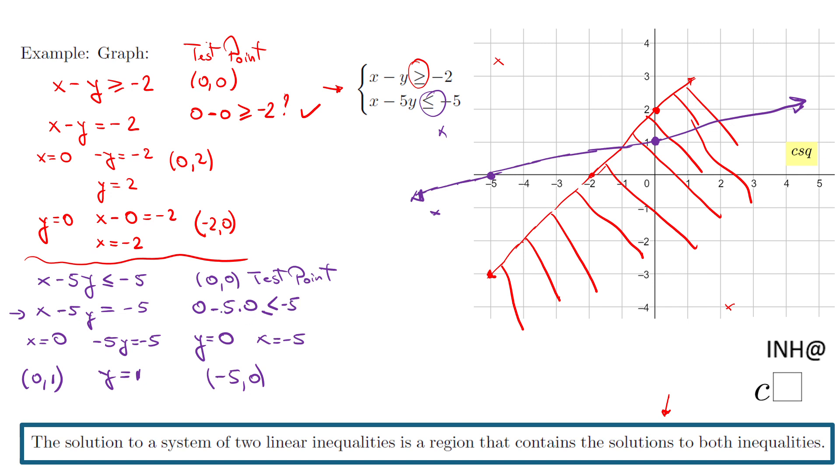If you take a look, this will be zero, zero, less or equals negative five. No, that's false. So now zero and zero is down here. So we're going to switch the side and we're going to shade the top in this case, because that's the side that makes this inequality true.